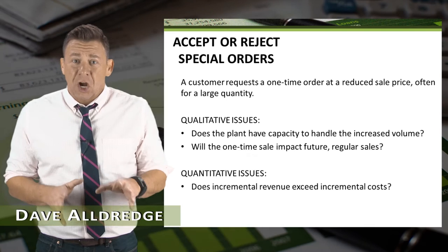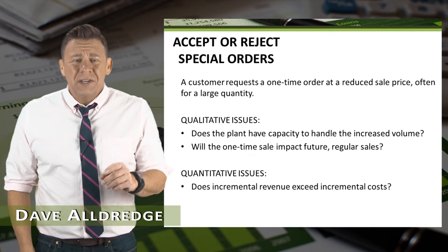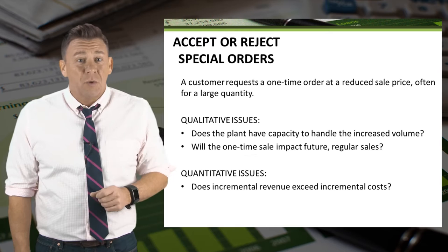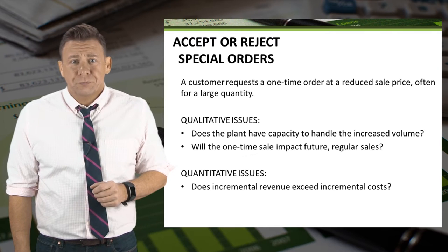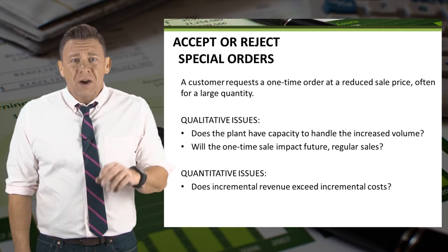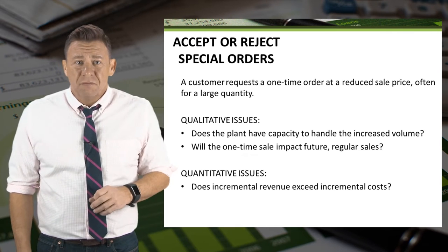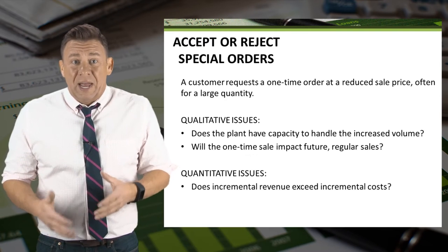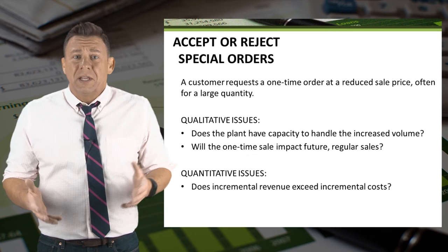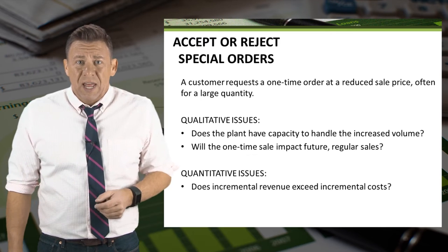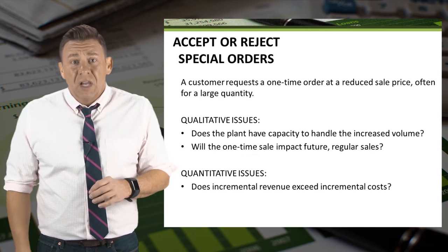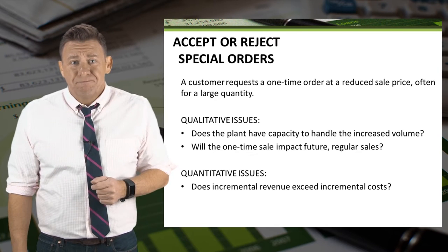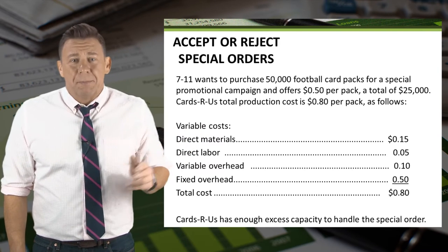Sometimes customers request large, one-time orders at a reduced price, and management must decide whether or not to accept it. There are both qualitative issues — like if the plant has capacity to accept the order, and if accepted, does it hurt regular sales? — and quantitative issues, like if the incremental revenue is greater than the incremental cost. Let's look at an example.